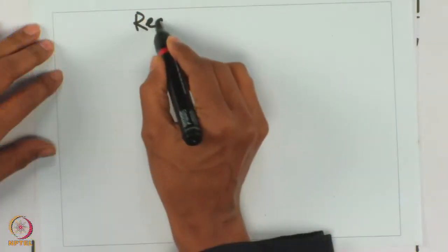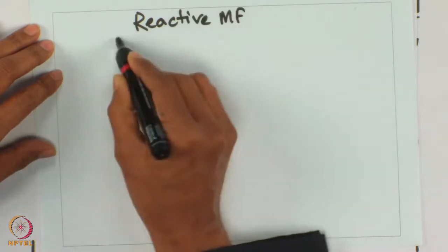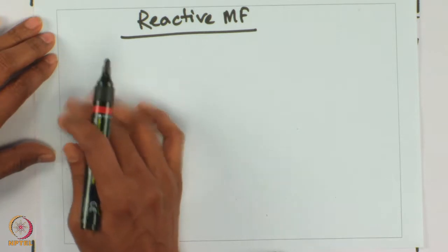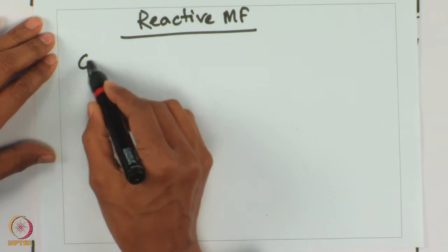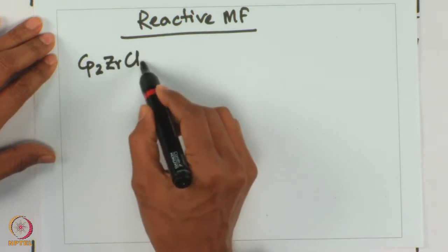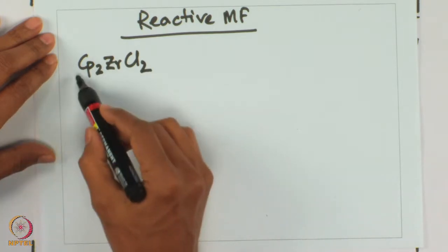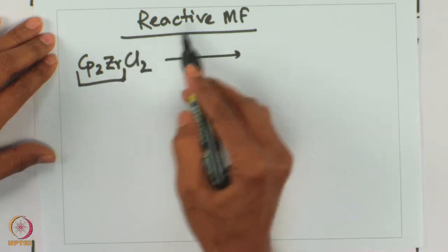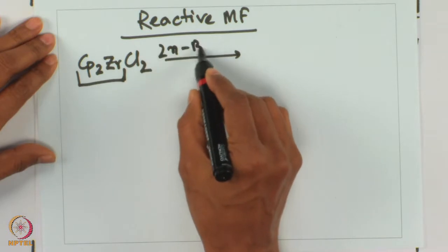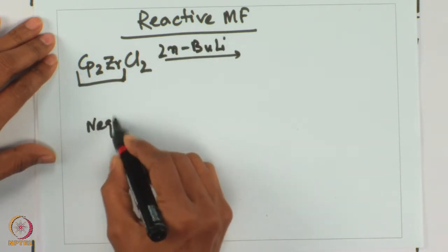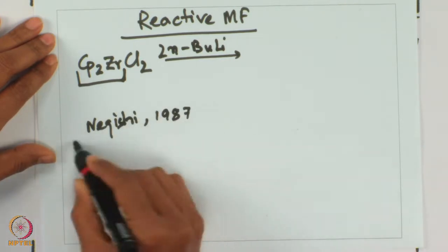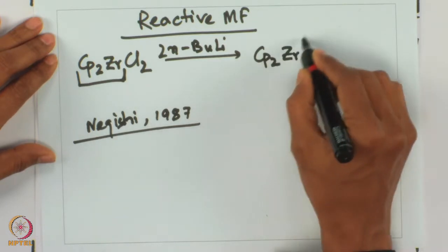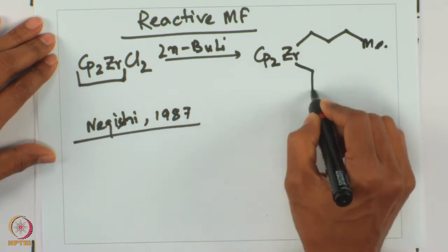For oxidative cyclization, the reactive intermediate we first discuss is the reactive metal fragment. The most important thing is to deliver the cyclopentadienyl zirconium intermediate. Cyclopentadienyl zirconium species are available — for example, you can prepare zirconium chloride. Two equivalents of n-butyl lithium can be reacted; this is reported by Negishi in 1987.